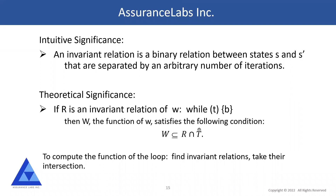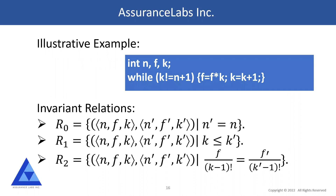To compute the function of the loop, we find invariant relations, take that intersection, then take the post-restriction to not-T, and that delivers the function of the loop. Everyone is familiar with invariant assertions and loop invariants; we find that invariant relations are a lot more useful and powerful as a concept.